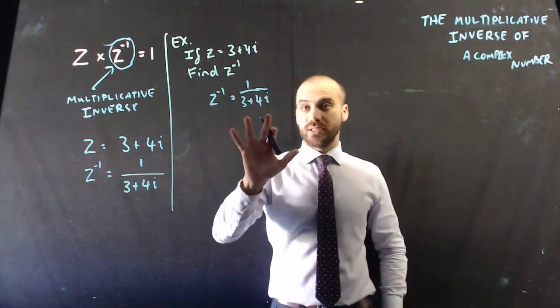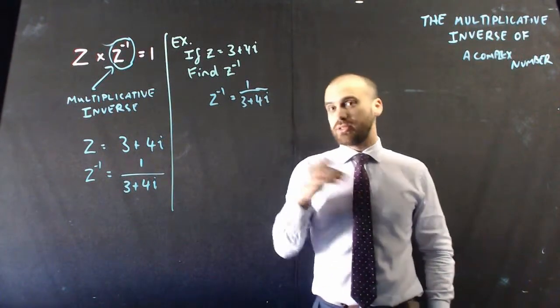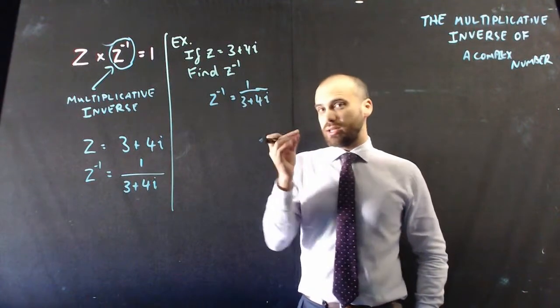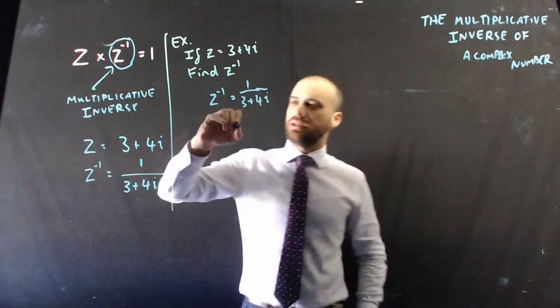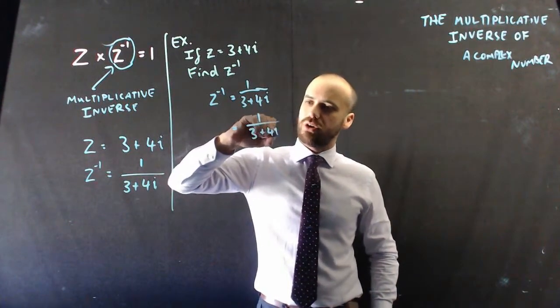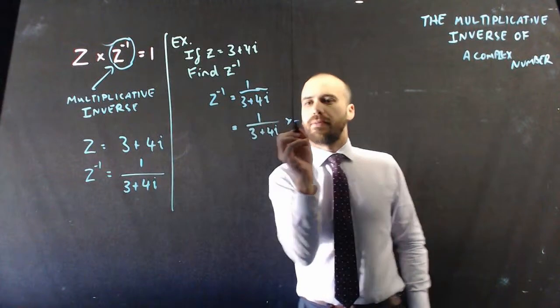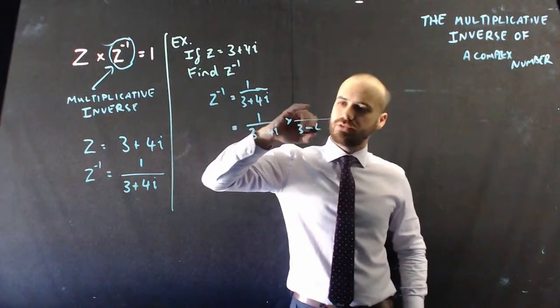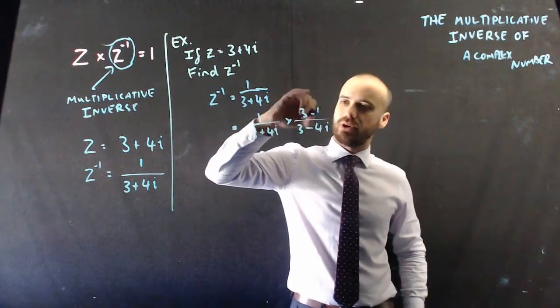And the way that we can do this, this is going to feel really familiar, because we can do the same thing that we did with thirds. We can use a conjugate to make this a little bit neater. So I can say that that's the same as 1 over 3 plus 4i, times 3 minus 4i, 3 minus 4i.